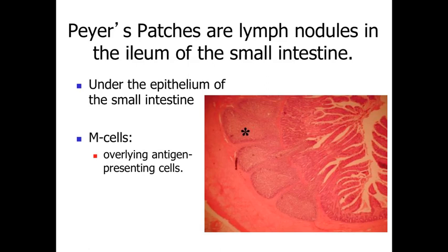Peyer's patches are lymph nodules sitting within the small intestine, underneath the epithelium. They underlie some specialized epithelial cells called M cells, which are an example of antigen-presenting cells. These M cells sample what's passing through the lumen of the small intestine and project through a long cellular process down into the lymph nodule, essentially presenting those materials to the cells, asking whether what's been found out in the lumen is foreign, unknown, or potentially causing a disease process.